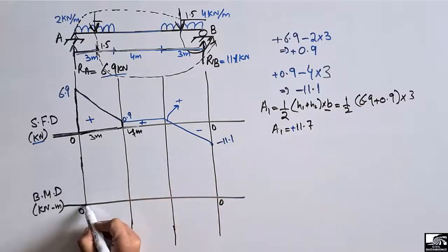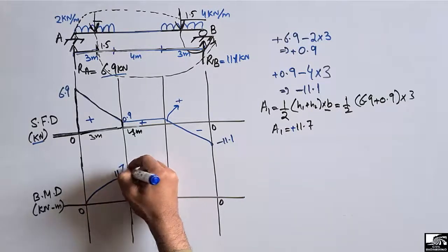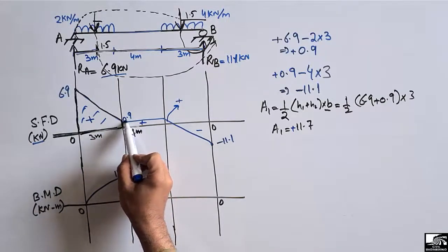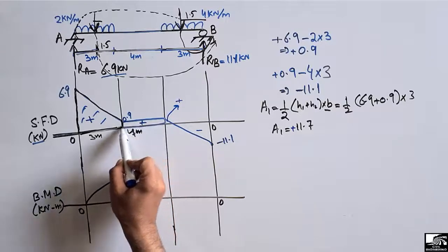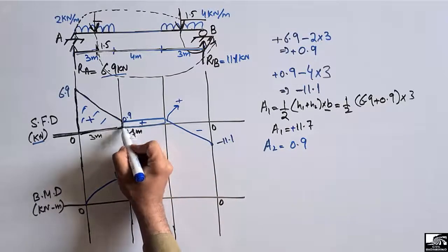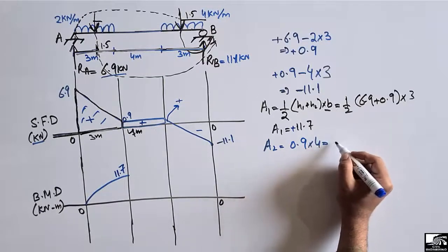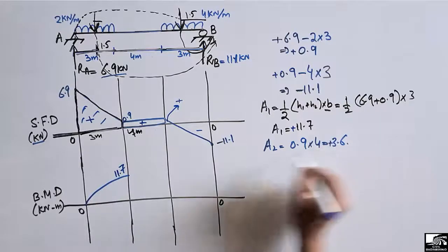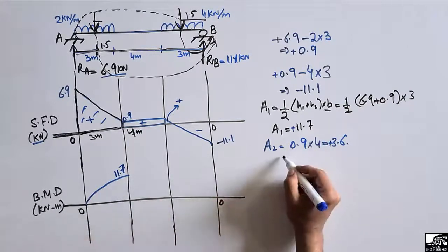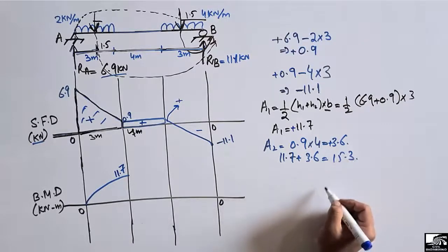Shear box 2 is a rectangle with height 0.9 kN and base 4 meters. Area A2 = 0.9 × 4 = 3.6 kN·m. It is positive, so we add it to the previous value: 11.7 + 3.6 = 15.3 kN·m. The bending moment reaches 15.3 kN·m at this point, shown by a linear line.